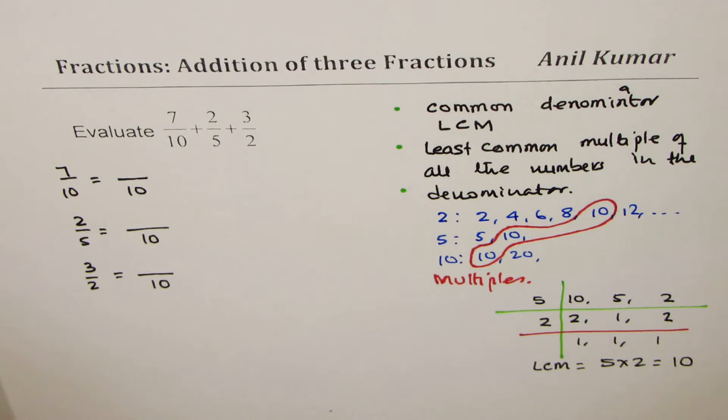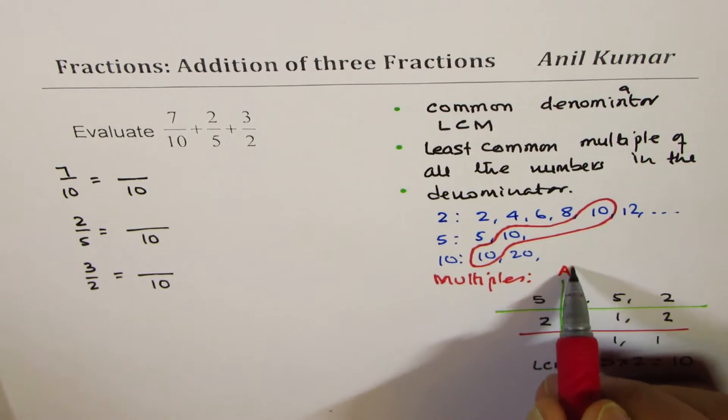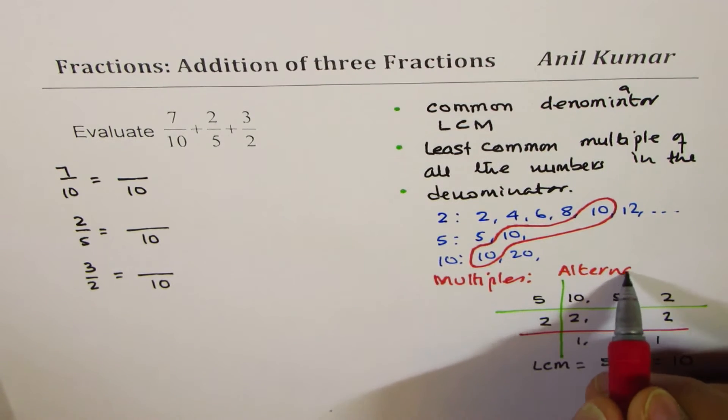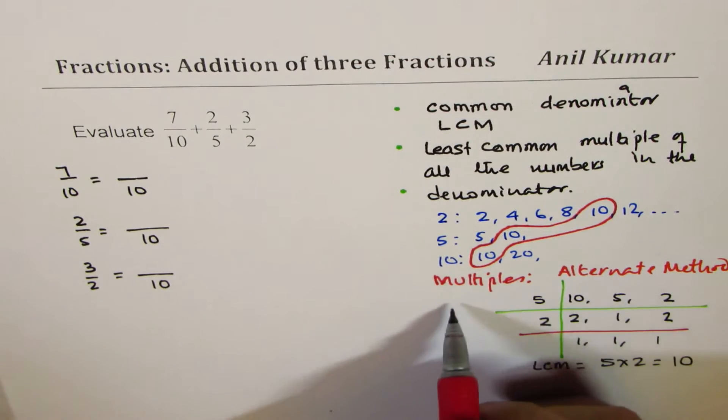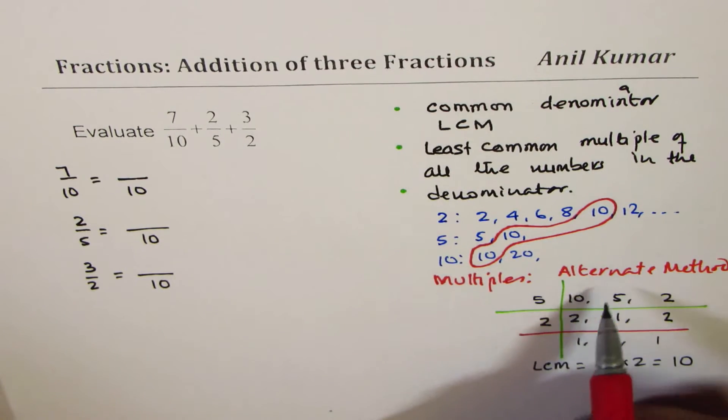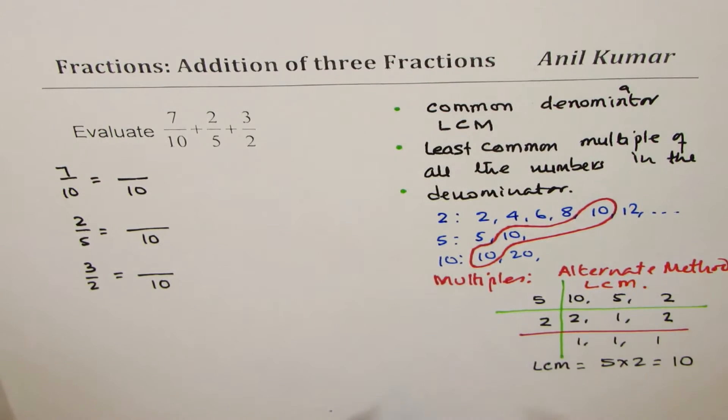So this is alternate method to find LCM. This is a preferred method since sometimes it's not that easy to see the common denominator but this speeds it up. So we have to understand how do we quickly find LCM for numbers. There are two ways of doing it. This is a preferred method.